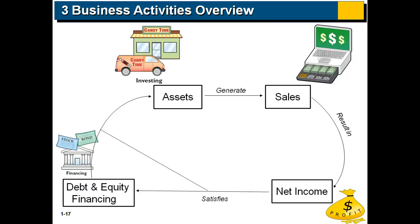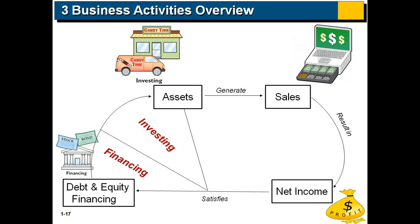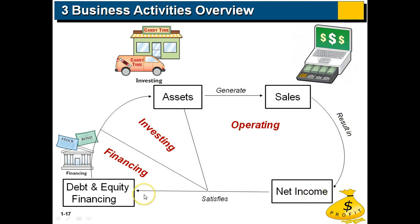Breaking it into the three activities: the first general area is financing — the three business activities start with financing through debt and equity. Then we take the cash from that financing activity and invest in assets. Then the assets, along with services, are used to generate sales revenue, which ultimately results in profits — net income — to the company, satisfying the owners. This is the end of this video.